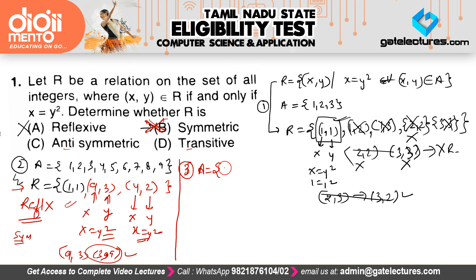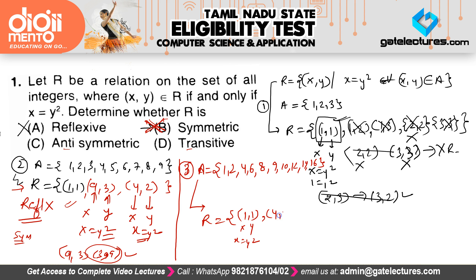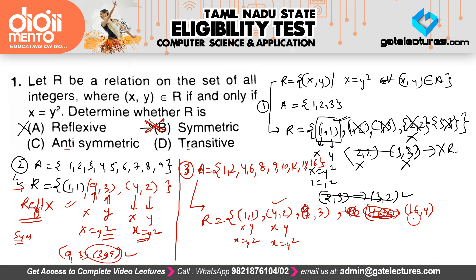Let set A have elements {1, 2, 4, 6, 8, 9, 10, 12, 14, 16}. The pairs satisfying X = Y² are: (1, 1), (4, 2), (9, 3) — wait, 3 is not in the set — (16, 4), and (9, 3) only if 3 is present. So we have (1, 1), (4, 2), (9, 3) if applicable, and (16, 4). So (16, 4) is there and (4, 2) is there.